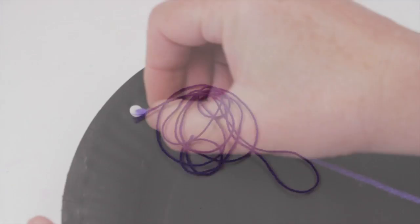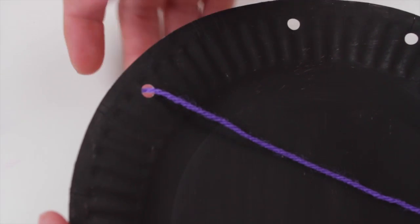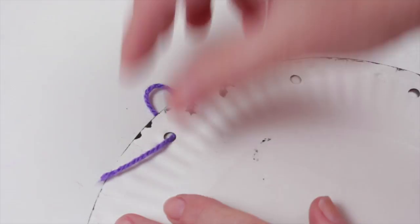Cut the yarn into a long piece. Thread the yarn through one of the holes and tape the end of the yarn to the back of the plate.